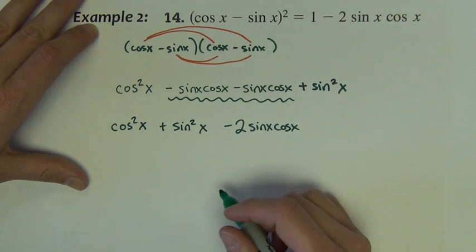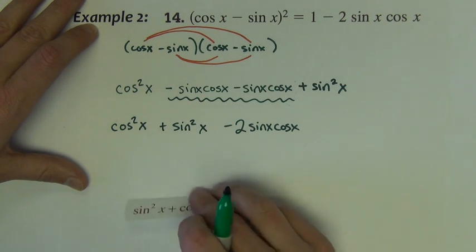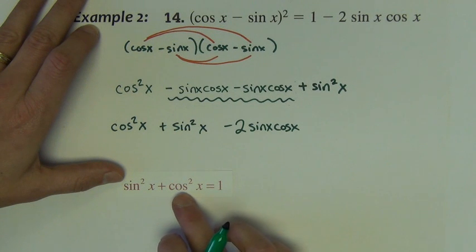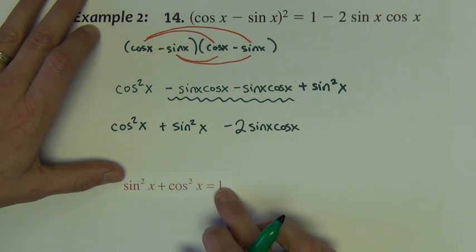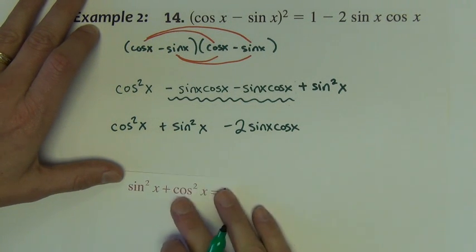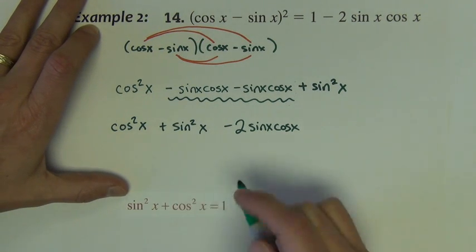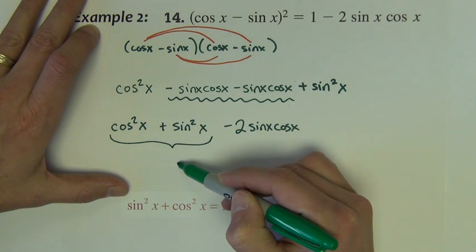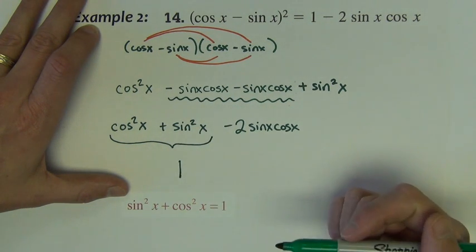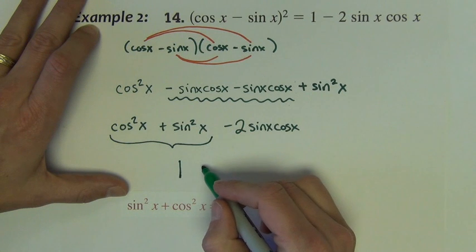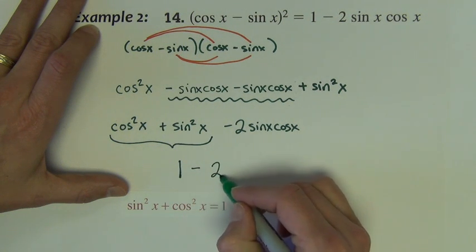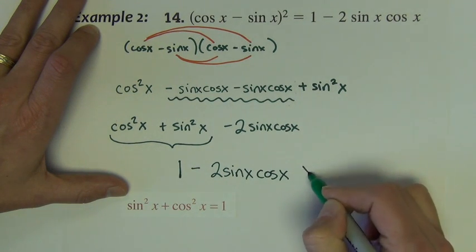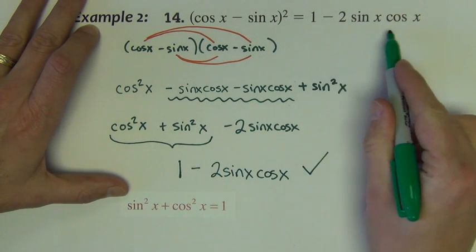Let's recall this fact right here, that sine squared x plus cosine squared x is equal to 1. That's our Pythagorean identity. So if sine squared x plus cosine squared x equals 1, that's this part of this line is equal to 1. So I have 1 minus 2 sine x cosine x, and that's what we were trying to prove.